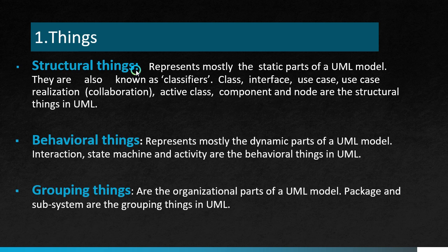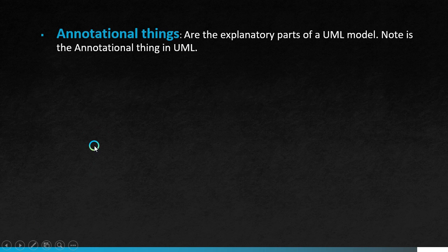The third type is grouping things — the organizational parts of the UML model. Package and subsystem are examples of grouping things. The fourth type is annotation things — the explanatory parts of the UML model. Note is the annotation thing in UML. It is used to explain elements using formal or informal explanatory text, or an embedded image.